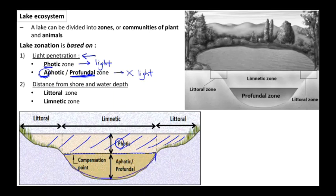We can also divide the lake into zones based on the distance from the shore and the water depth. Both littoral and limnetic zone, they are the sub-zones of the photic zone, which means they are not very deep, only on the surface of the water. And that's why both of them are well lit, which means both of them can have sufficient light.